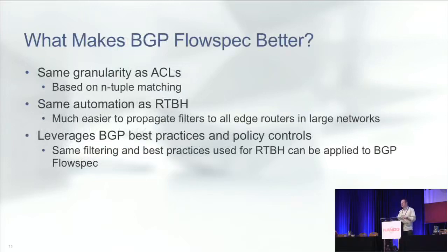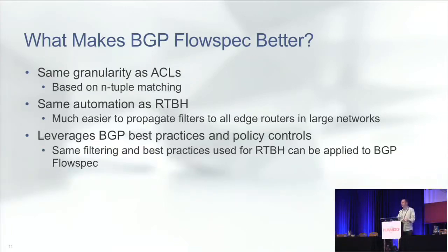What makes BGP flow spec better? It gives you more granularity than a straight access list — you can be very particular about what traffic you want to block versus allow. But it also gives you the automation similar to remote trigger black hole, where either from an internal route server or by trusting customers, you can allow them to send flow spec routes. And it leverages the BGP best practices and policies we as an industry have been using for years — it's not a new protocol.